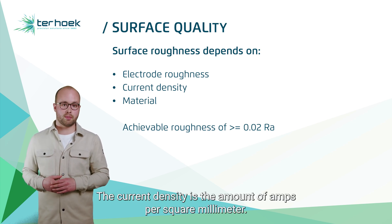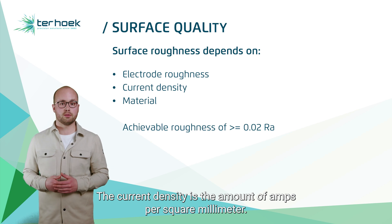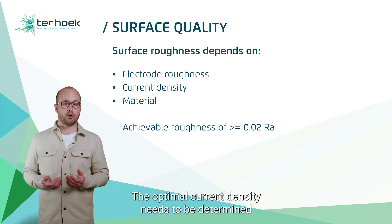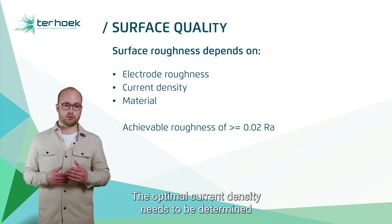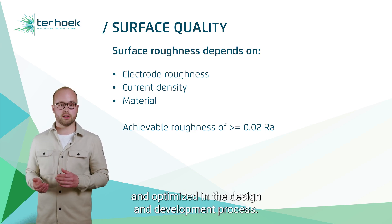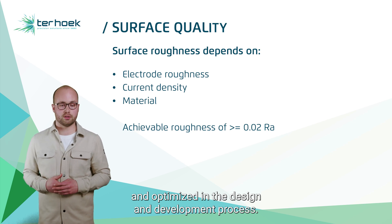The current density is the amount of amps per square millimeter. The optimal current density needs to be determined and optimized in the design and development process.